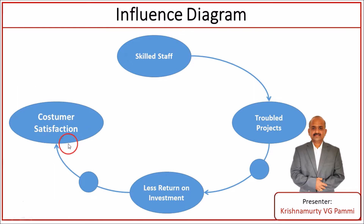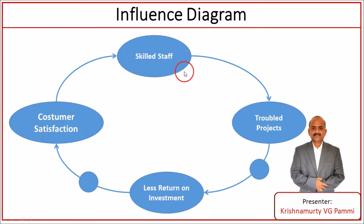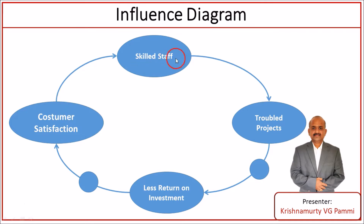The moment you see less or medium customer satisfaction, you tend to arrive at a conclusion to assign skilled staff on such projects. So it is like a circle — skilled staff leading to troubled projects, leading to less return on investment, leading to less or medium customer satisfaction, and again you have skilled staff being assigned to troubled projects. The circle goes on.